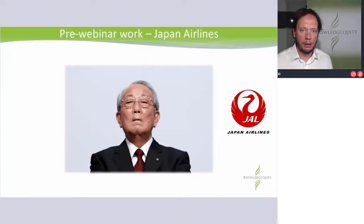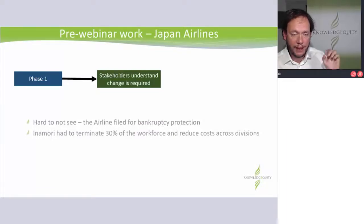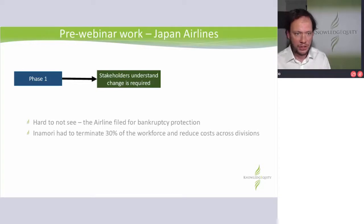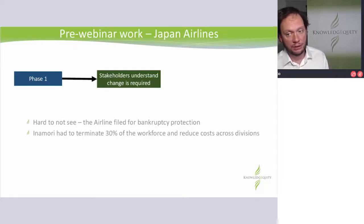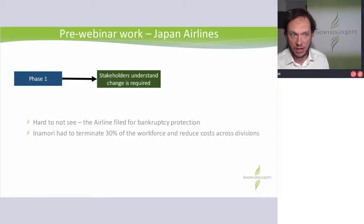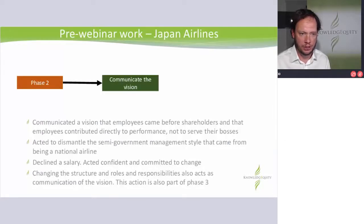We've also got the pre-work of Japan Airlines. Phase one — did he have to do much for a sense of urgency? No, it was hard not to see it. The airline had filed for bankruptcy protection and had to terminate 30% of the workforce and reduce costs across all divisions. That's certainly going to get all your stakeholders aware of what's going on. And it's also going to upset people and make change hard. But there was no choice — the company was in financial distress.